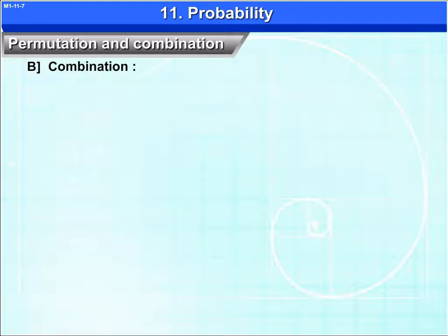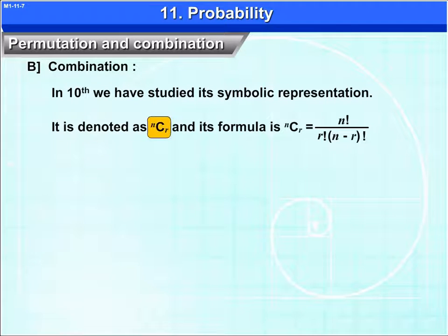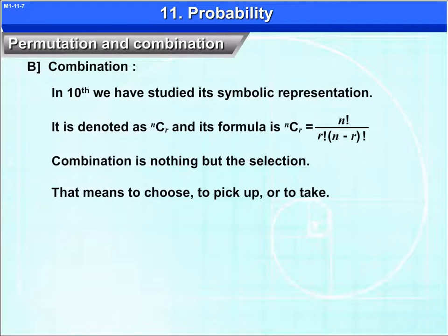Combination. In 10th we have studied its symbolic representation. It is denoted as nCr and its formula is nCr equals n factorial upon r factorial into n minus r factorial. Combination is nothing but the selection, that means to choose, to pick up or to take.